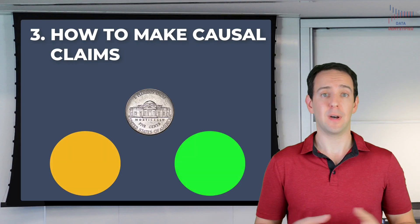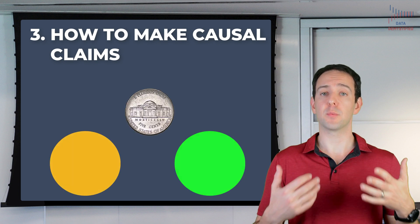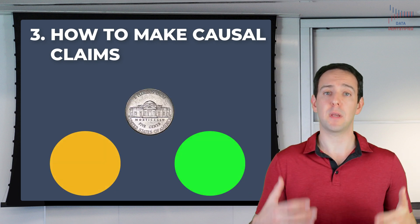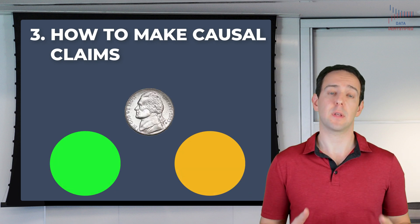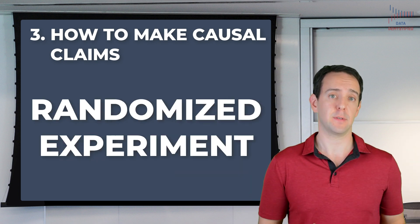Instead, my advice might focus on mechanisms I think are causally responsible for wealth, like getting a college degree or picking a high-earning career. The point is that just because two concepts have an association doesn't mean that one of them causes the other. So how do we make a causal claim then? If merely observing that two ideas are related isn't enough, then what is? As I said at the start of this video, there's really only one main way to do this, and that's with a randomized experiment.